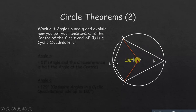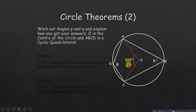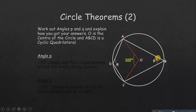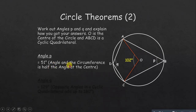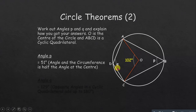The properties are clear: angle p is half the angle at the center, so if the center angle is 102 degrees, p equals 51 degrees. The reason is that the angle at the circumference is half the angle at the center — or equivalently the center angle is twice the circumference angle. Also, p plus q always equals 180 degrees.